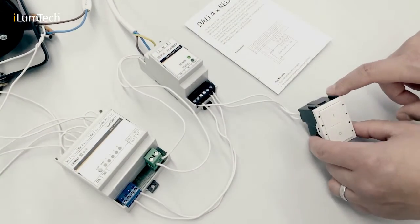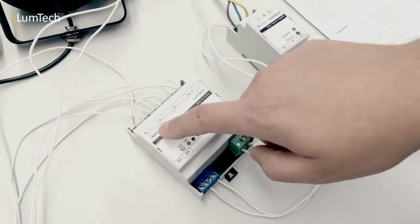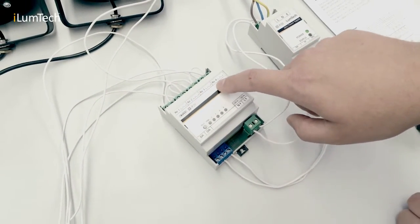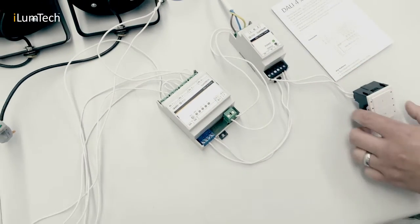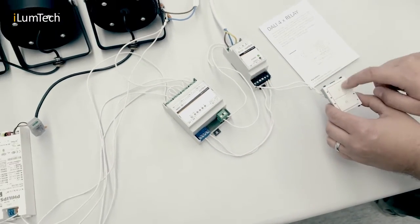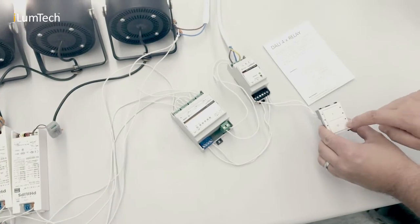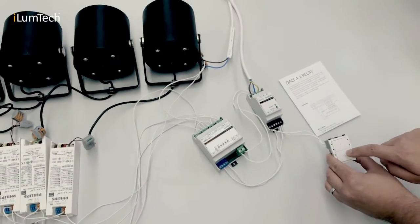After commissioning, you will see four new addresses on the DALI line with each address representing one relay contact. To change the state of the contacts, you can use direct level commands or standard commands such as OFF, RECALL MAX or RECALL SCENE.